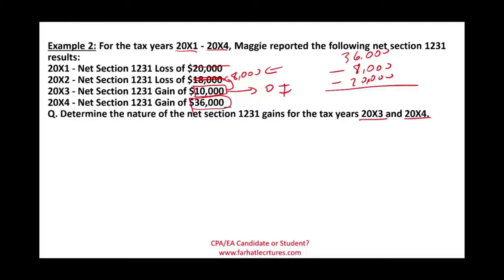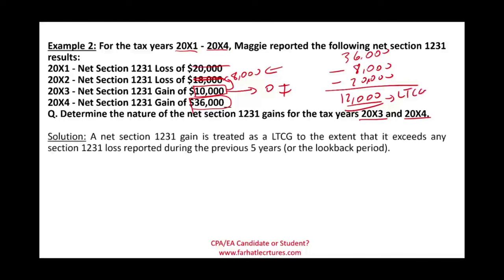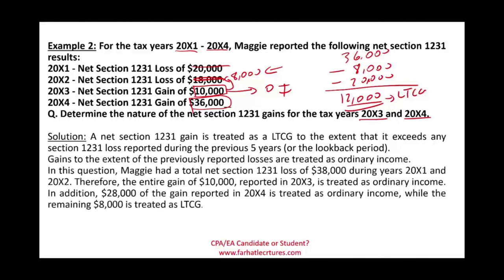Taking $36,000 minus $8,000 minus $20,000 equals $8,000. So $12,000 is treated as long-term capital gain and the remaining $28,000 is treated as ordinary income. In summary: Maggie's total prior losses of $38,000 mean the entire $10,000 gain in 20X3 is ordinary income, $28,000 of the 20X4 gain is ordinary income, and only $8,000 of the 20X4 gain is long-term capital gain.